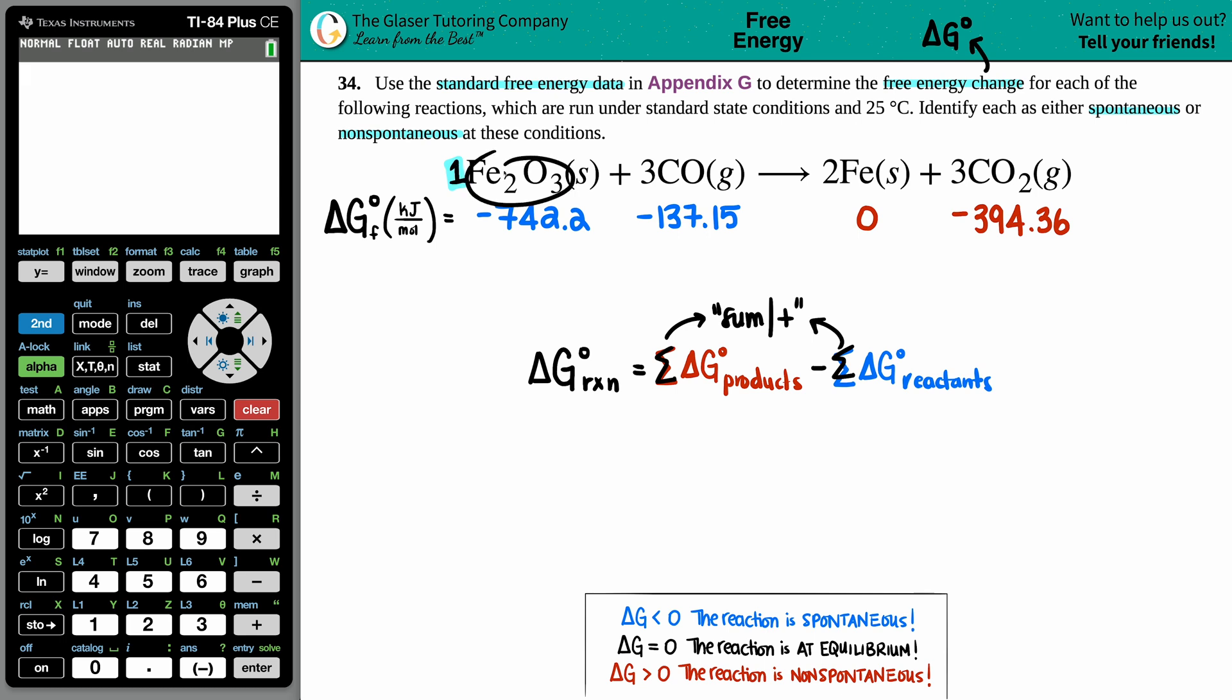There was only one Fe2O3, three CO's, two Fe solids, and three CO2's. These values—negative 742.2, negative 137.15, zero, and negative 394.36—are all for just one of each component. For example, I have three carbon monoxides, so I have to take this value and multiply it by three.